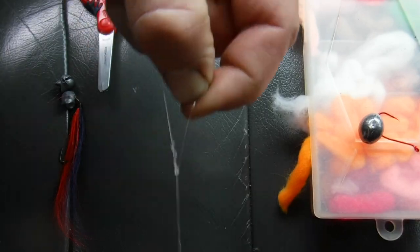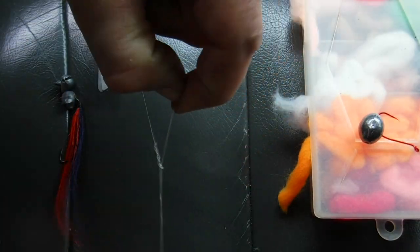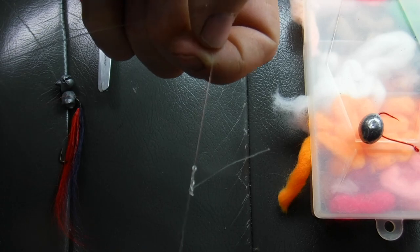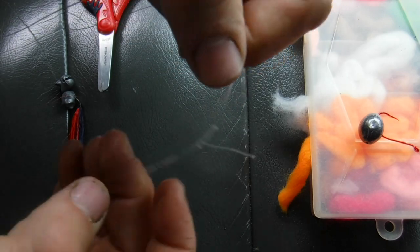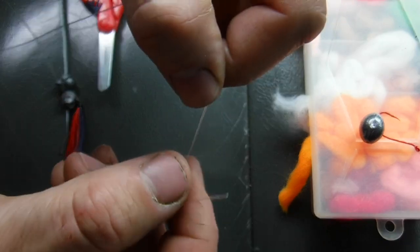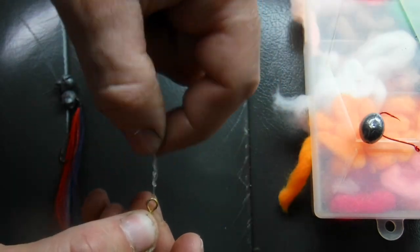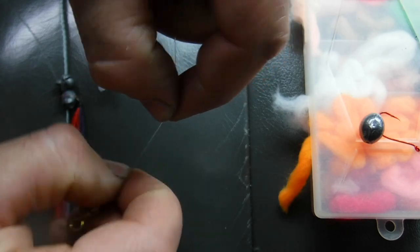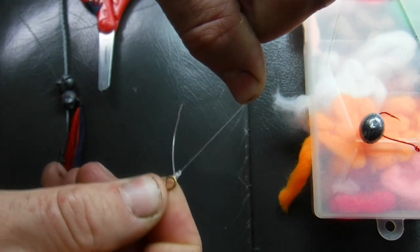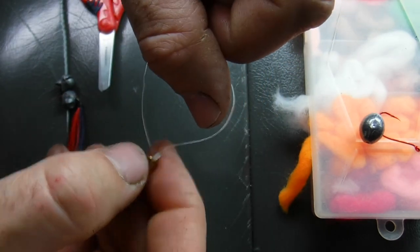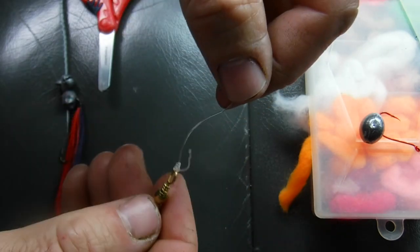And then I squeeze both that and the body of my line and it pulls it tight. I can let go of that tag end. And then you can just slide this down to your hook, inch it down, and pull that snug. You have tied what is called the standard fisherman's knot.